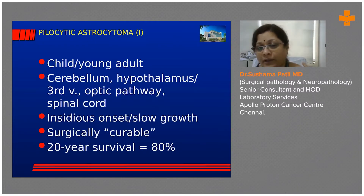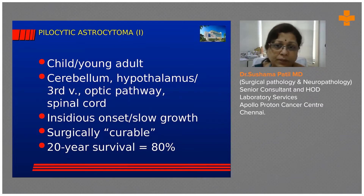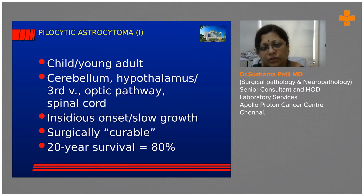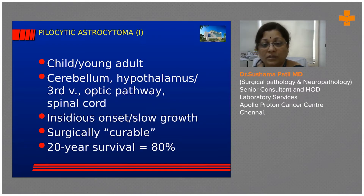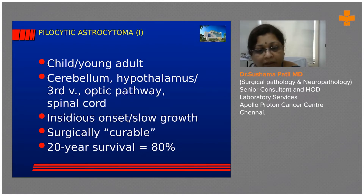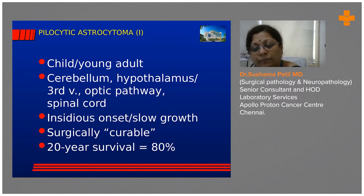Moving from diffuse gliomas, we now go to circumscribed gliomas — circumscribed astrocytomas, subependymal giant cell astrocytoma, and PXAs. These are what we call circumscribed gliomas. They usually occur in young adults, most commonly in the cerebellum and hypothalamus, and also in the third ventricle or optic pathway, and sometimes in the spinal cord. They are very slow-growing and surgically curable in the majority of cases, though a subset does not do well.